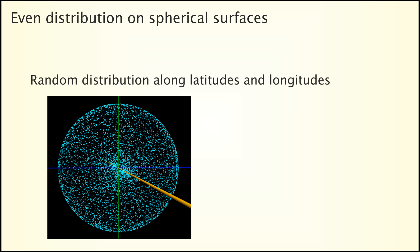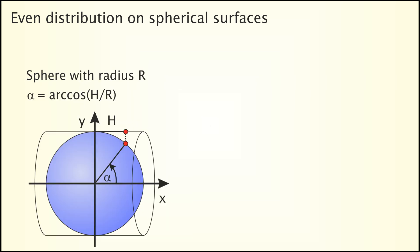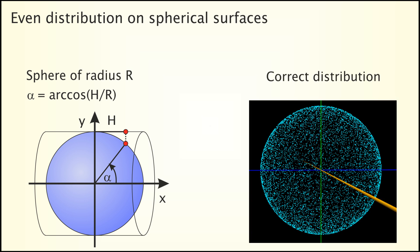There are several approaches for obtaining such a random spherical distribution. Random distributions along latitudes and longitudes will result in an uneven distribution with high densities near the poles. In many cases, this doesn't really hurt. For avoiding this uneven distribution, one can distribute the elements randomly over a cylinder and subsequently project them onto a sphere inscribed to this cylinder. Have a look at my POV-Ray scripts to this video on GitHub in case you want to see an example.